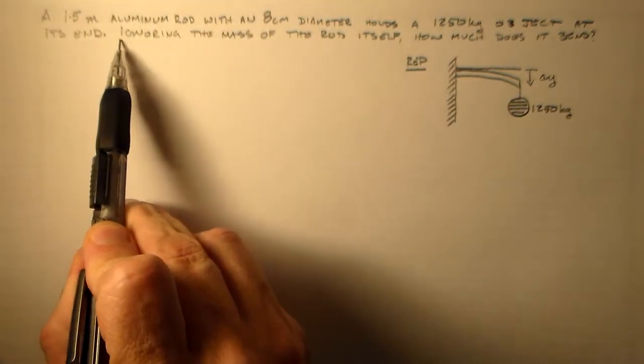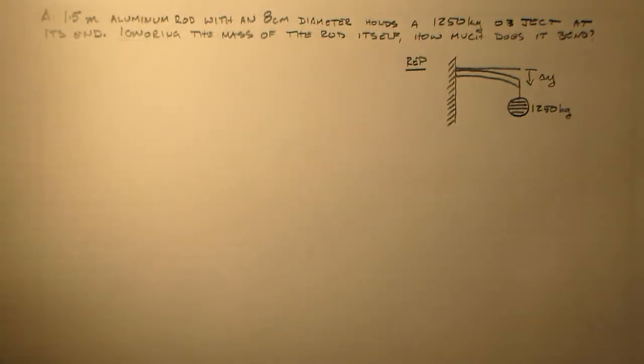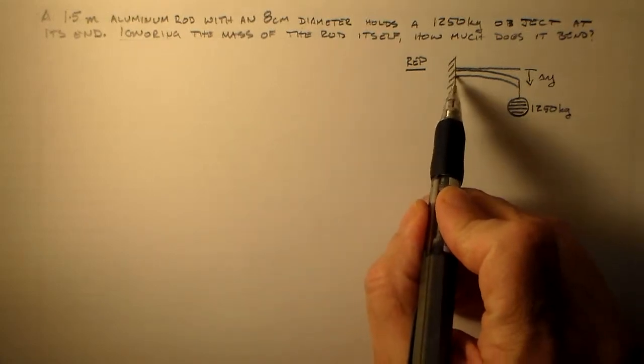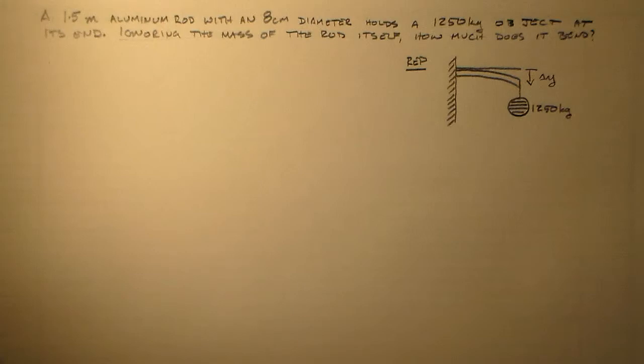Now here, also note it says ignoring the mass of the rod itself. You know, you could do something like this, and you'll probably do it in your advanced mechanics class, where you figure out exactly how much something bends under its own weight, which is a really fun problem. It's just not for this class. It's not for you yet, but you'll get to do it later. I'm sure you'll love it.